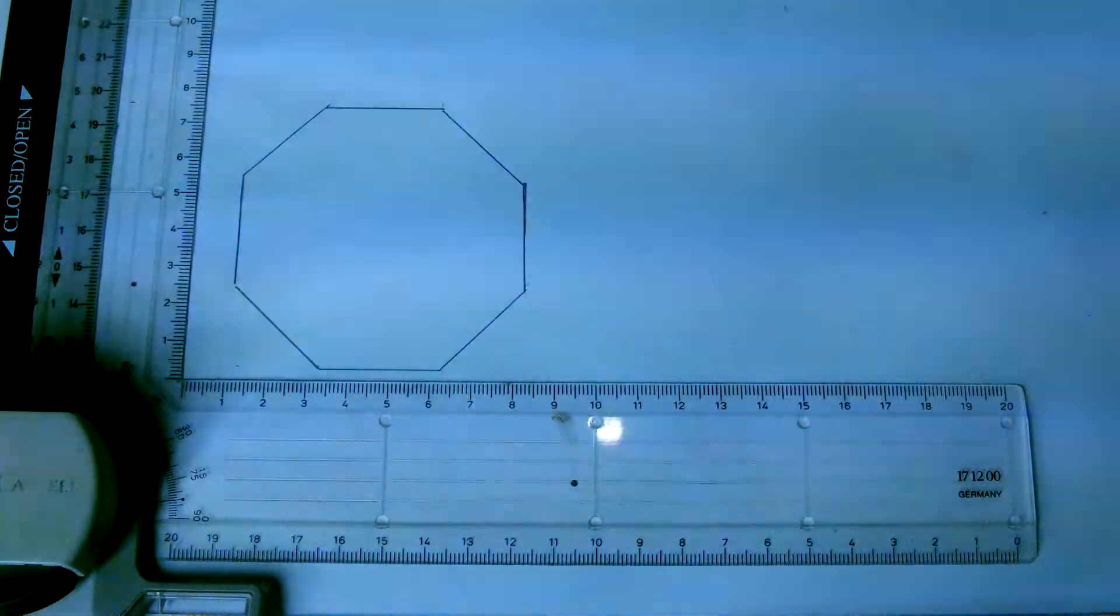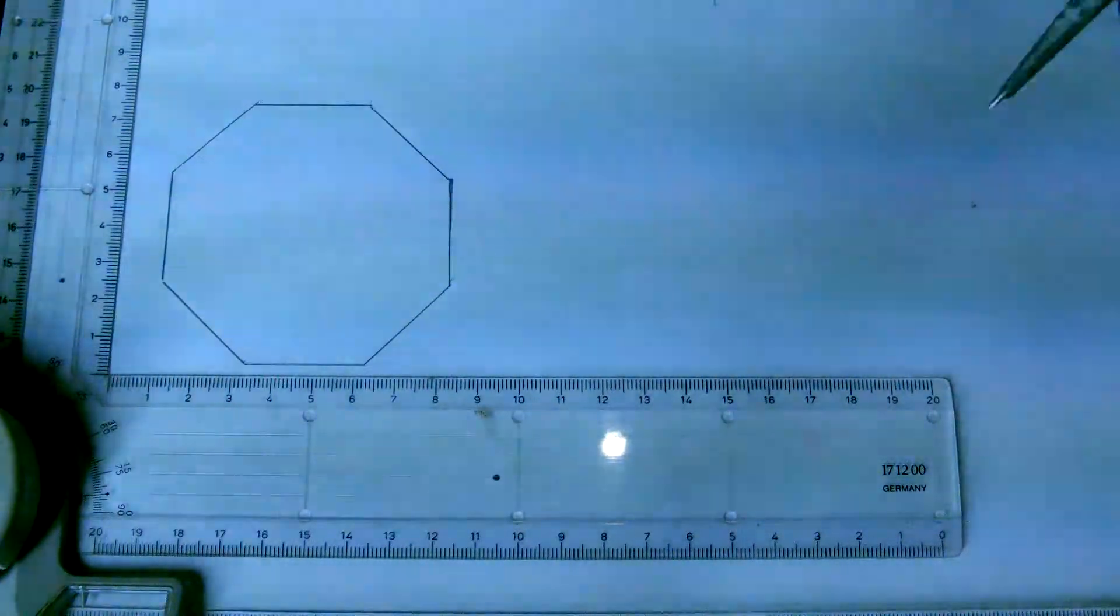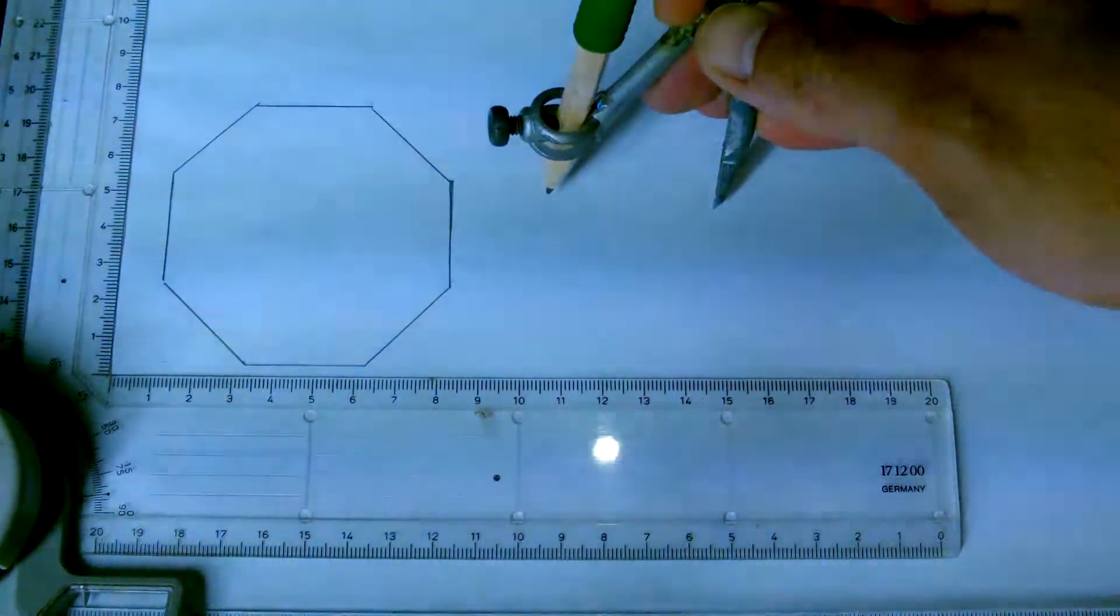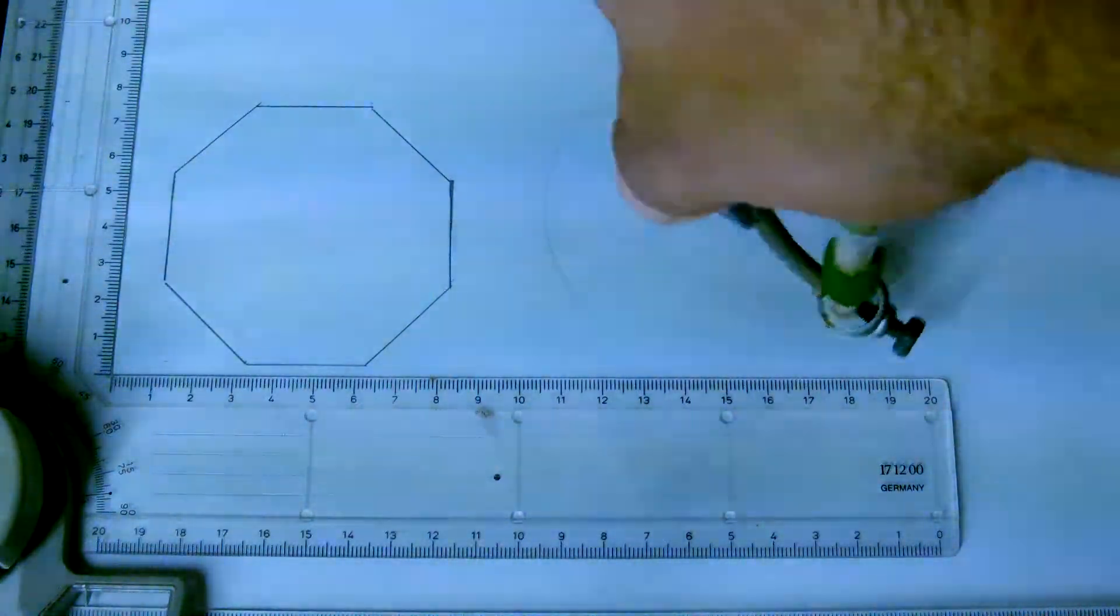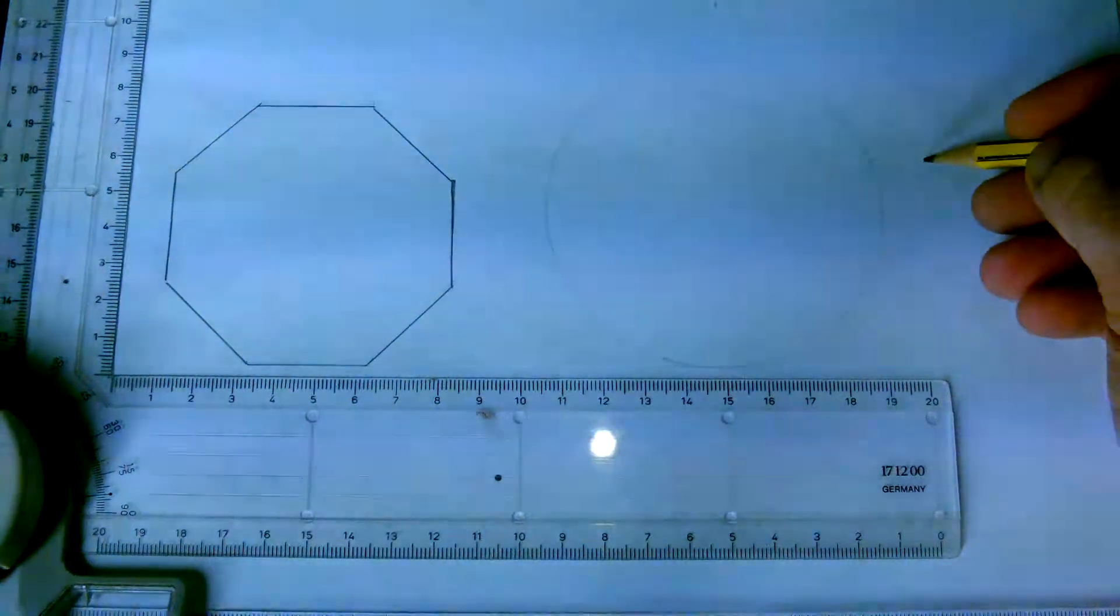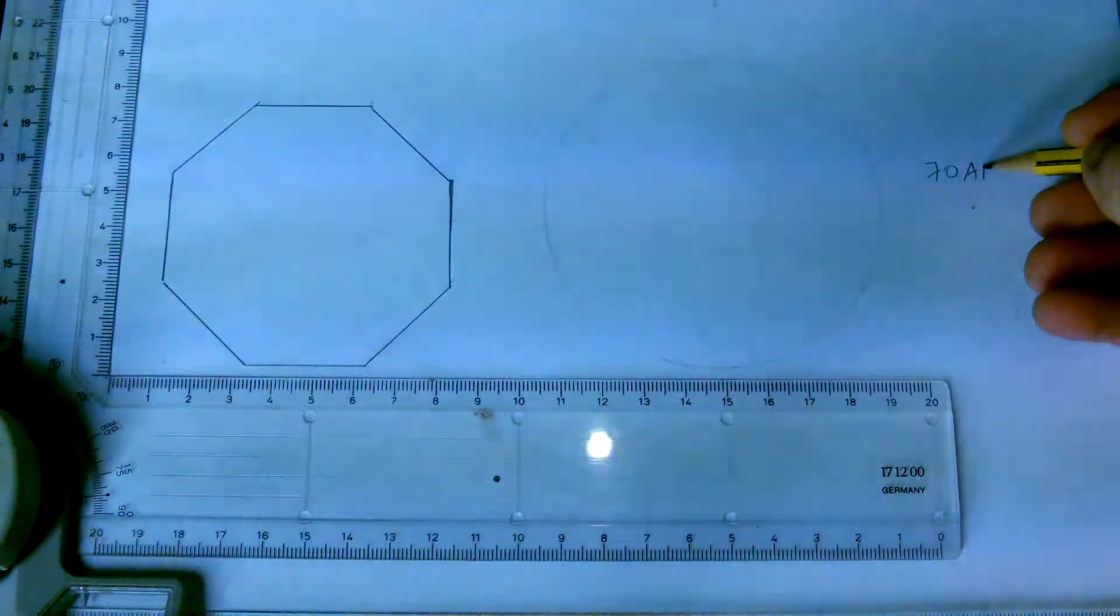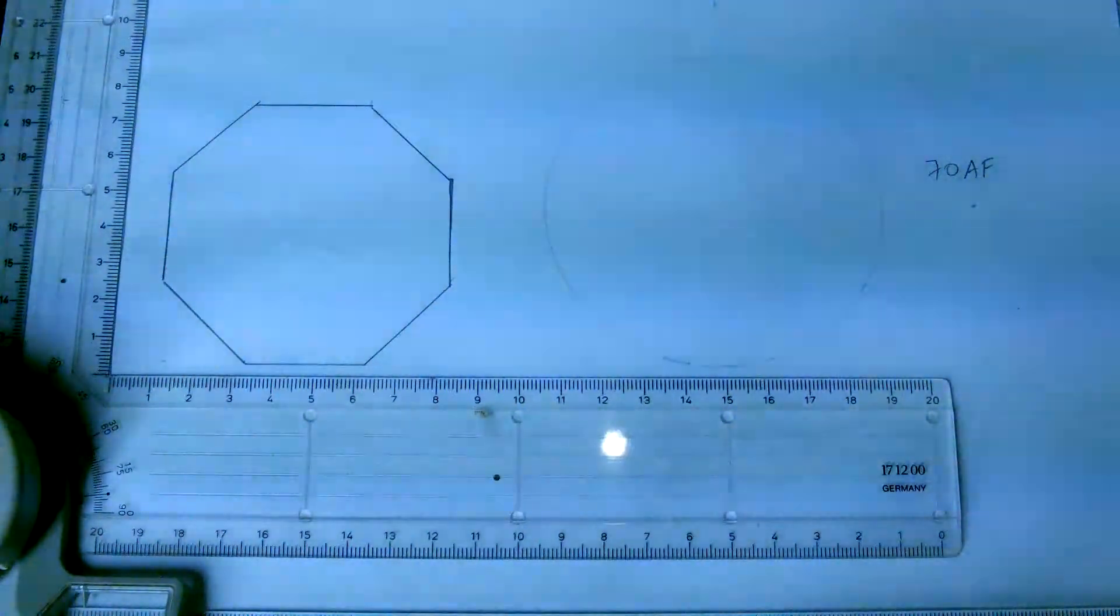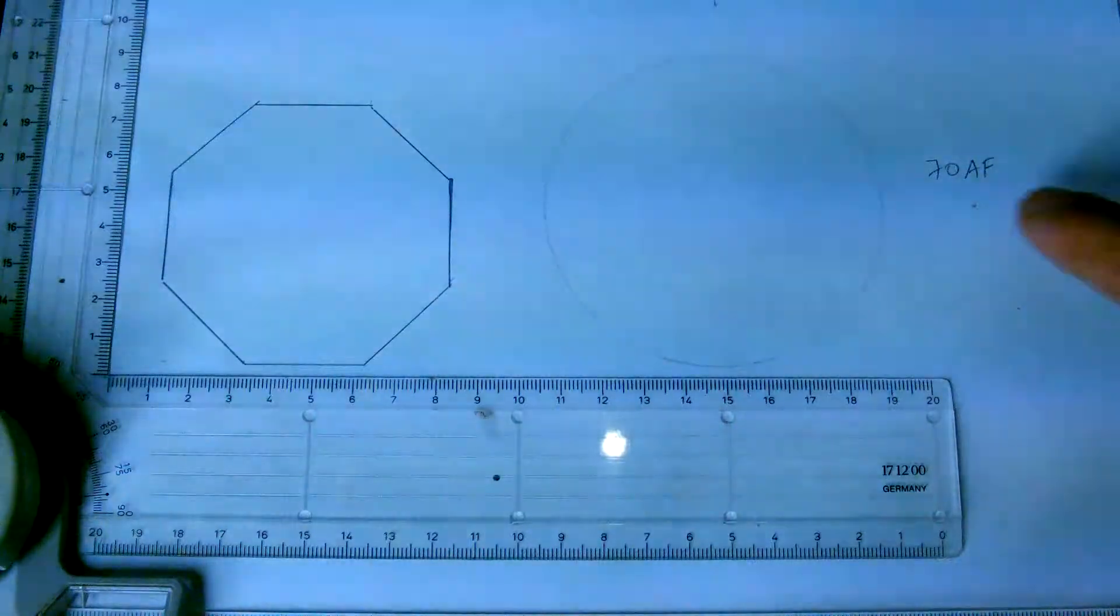Now let's say as in the case of a hexagon, you're given not the side but the distance across flats. So let's say I want an octagon that has dimensions given as 70 across flats, 70 AF.